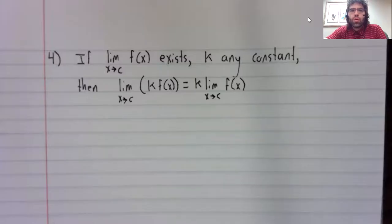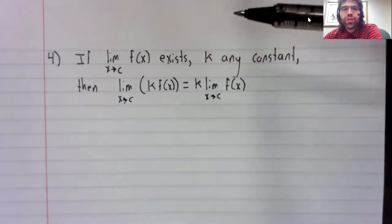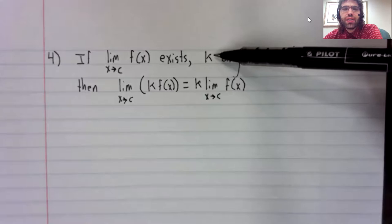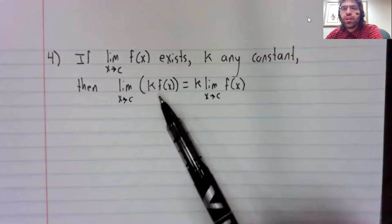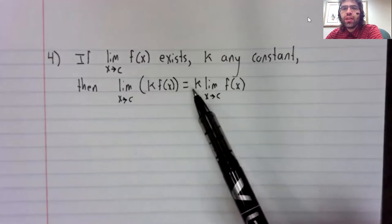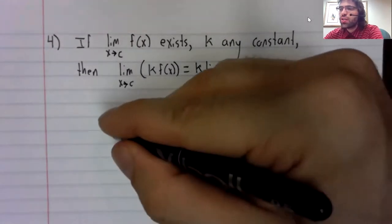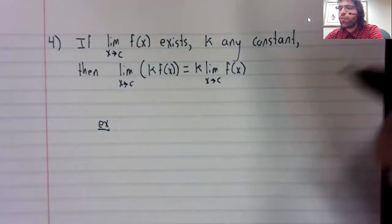One more rule in this video, although we'll pick right back up with rule five in the next. If a limit exists, and we have any constant k, then the limit of k times the function is k times the limit of the function.